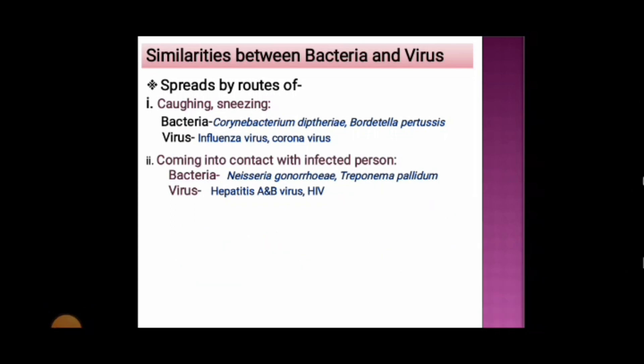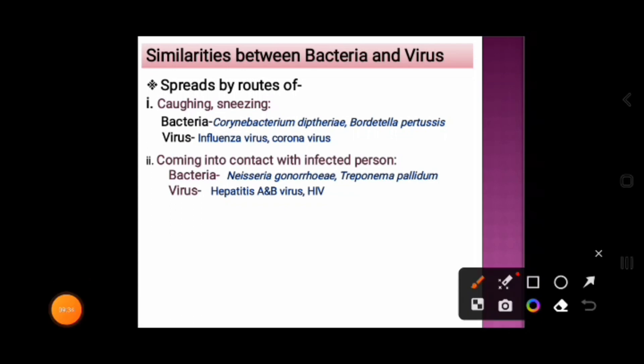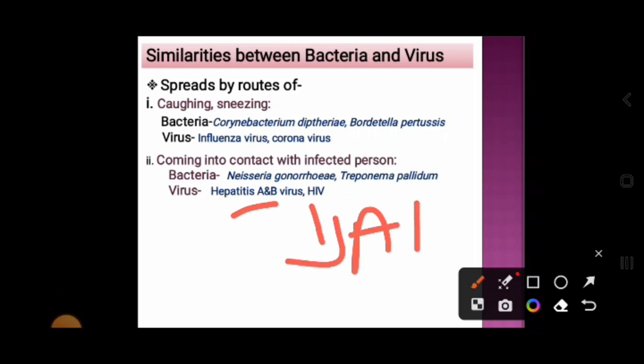Viruses that spread by contact with infected persons include hepatitis A and B virus and HIV — human immunodeficiency virus. These viruses also cause sexually transmitted diseases. Hepatitis A and B virus cause hepatitis A and B, and HIV causes AIDS.